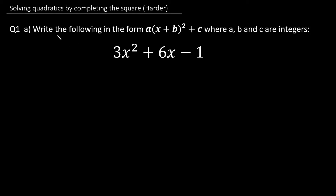Question one, part A: we are being asked to write the following in the form a(x + b)² + c, where a, b, and c are integers — whole numbers that can be positive or negative. This form is what a quadratic expression looks like after you have completed the square, so they're asking us to complete the square on 3x² + 6x − 1.